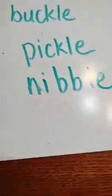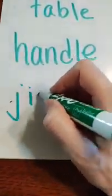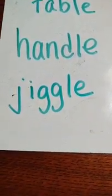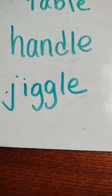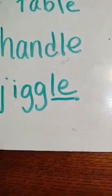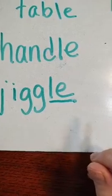Try this one. You got it — nibble. And let's try one more. You got it — jiggle. Very good, first graders. So remember, this is usually found at the end of a word, and that E is silent. First graders, you did an excellent job today. We will see you tomorrow. Bye.